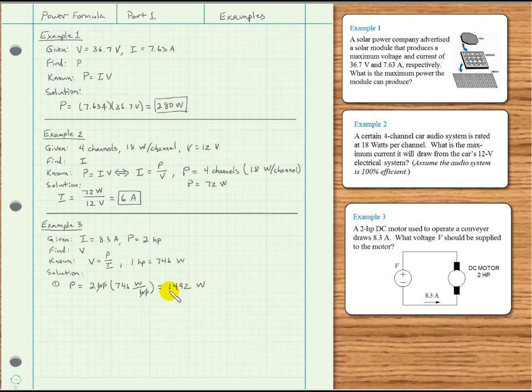That's not what we were asked to find, but we're going to use this in a minute. The second thing is we will use this form of the power formula to solve for V, which is what we were asked to find. So V is the power, which we now know as 1492 watts, divided by the current, which we were given as 8.3 amps. On my calculator, I get 179.8 volts, or approximately 180 volts.